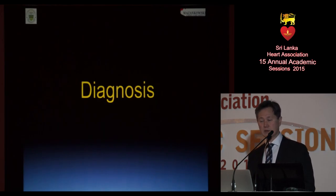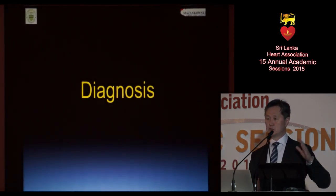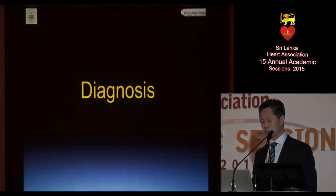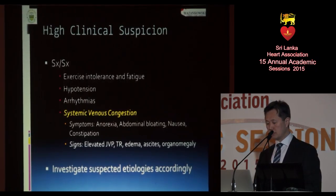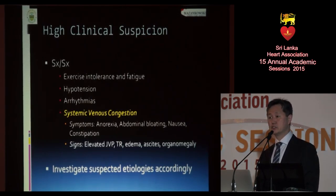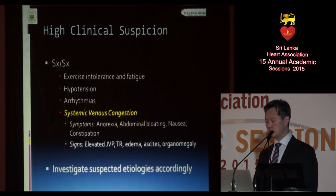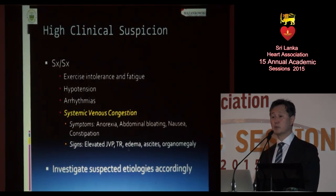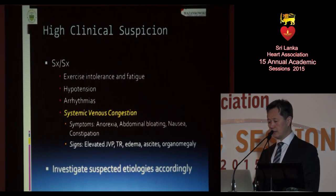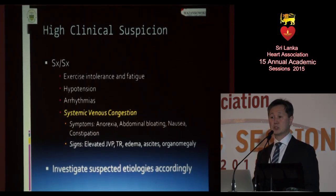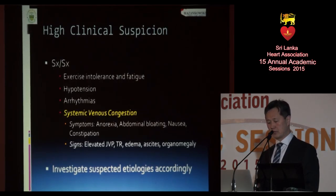How do you make a diagnosis of RV failure? At the extremes of the spectrum — no dysfunction or severe dysfunction — it's easy. But to pick up most patients with right ventricular failure, you need a very high clinical suspicion. The most common and perhaps most pathognomonic sign is systemic venous congestion. Patients complain of anorexia, abdominal bloating, nausea, and sometimes constipation, with classic elevation in JVP, tricuspid regurgitation seen with a pulsatile liver, and of course edema, ascites, and organomegaly. Exercise intolerance, hypotension, and arrhythmias also occur, but systemic venous congestion is probably what patients will most commonly complain about.